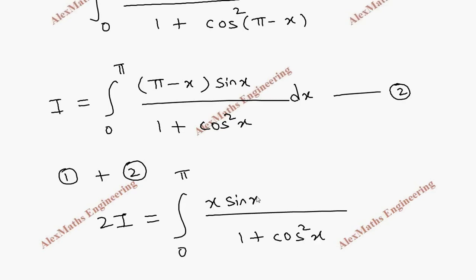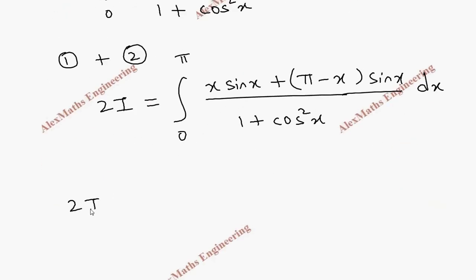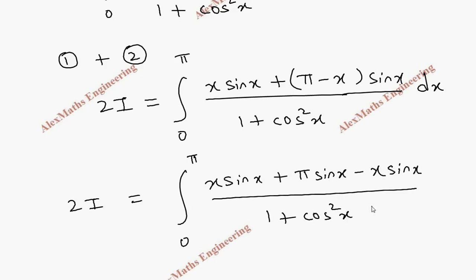In the first expression, we have x sin x. In the second expression, it is π minus x into sin x. Then we have dx. So here, 2i equal to integral 0 to π. In the numerator, x sin x, and I multiply the sin x inside, π sin x minus x sin x, whole divided by 1 plus cos square x dx.